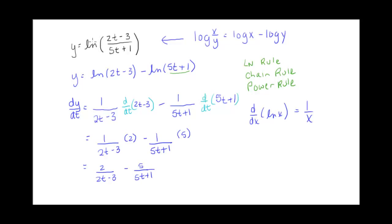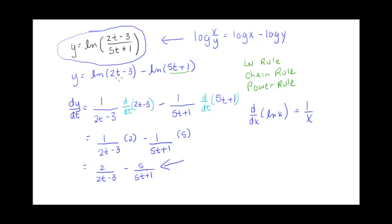If you think about what the derivative would look like without rewriting it, we'd have 1 over this whole fraction, and then we'd have to multiply by the derivative of the whole fraction using the quotient rule. So this approach — expanding with log rules first — is a much simpler process. That's it for this video. See you next time.